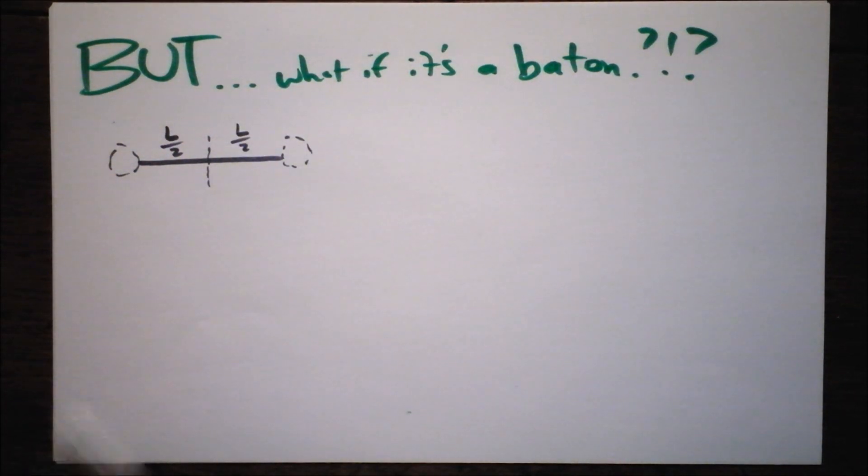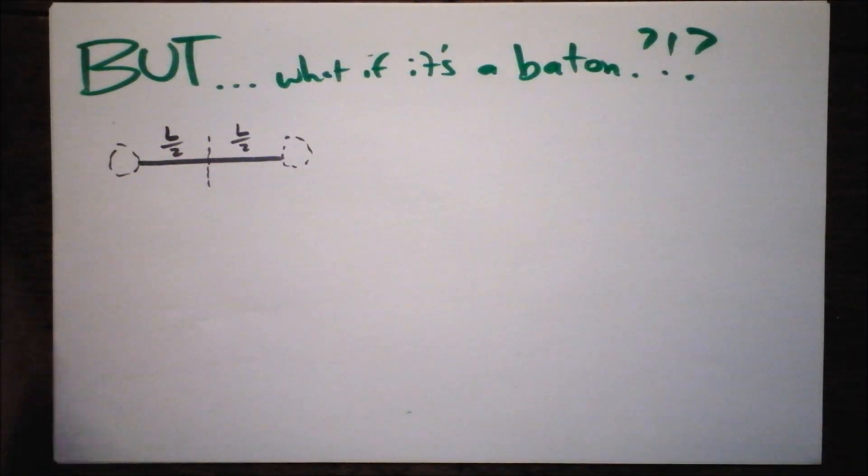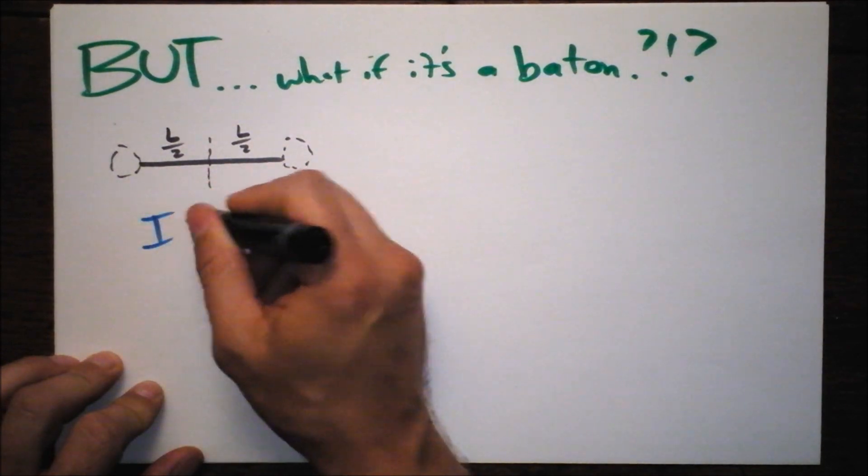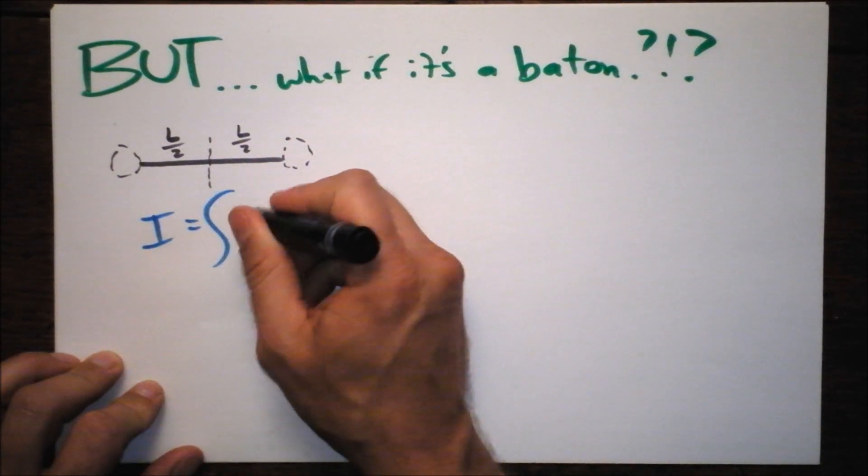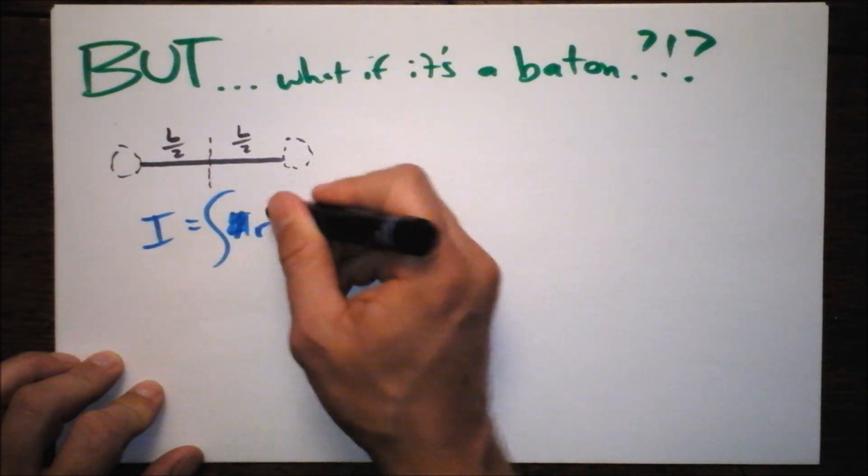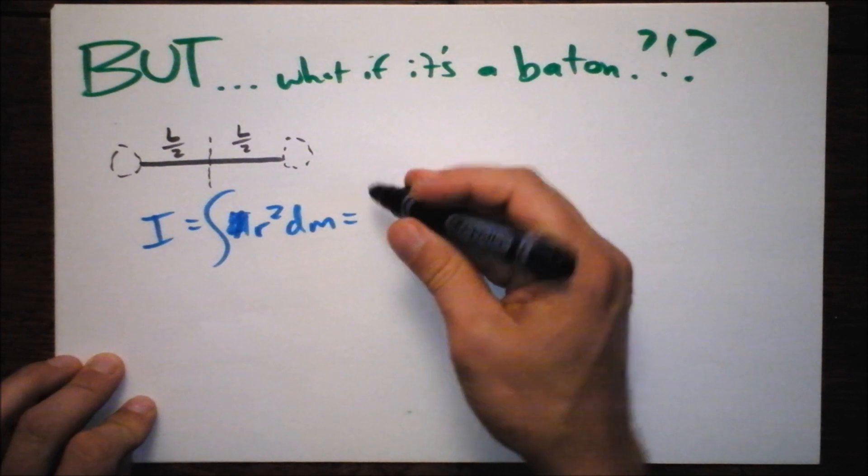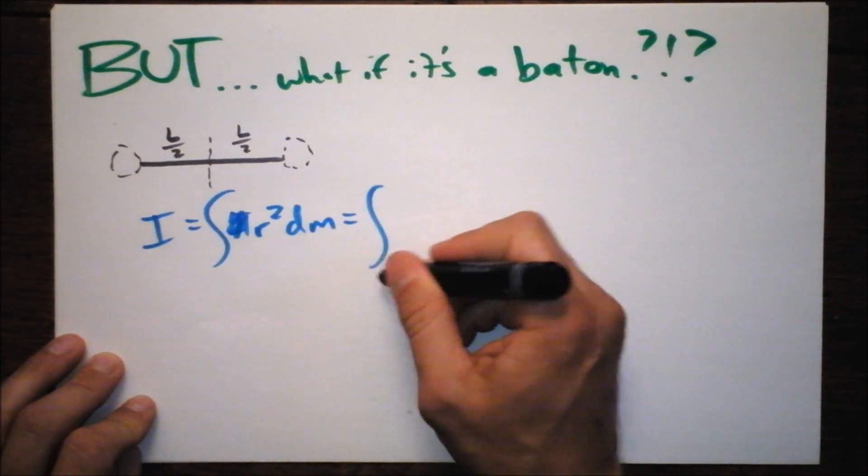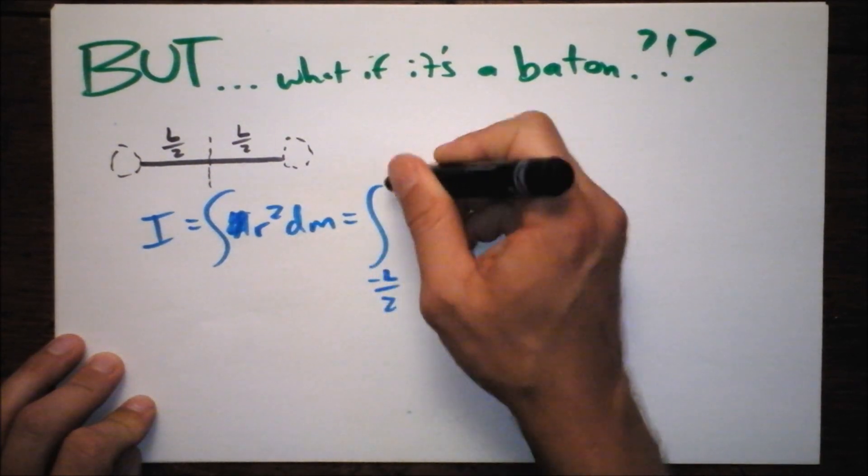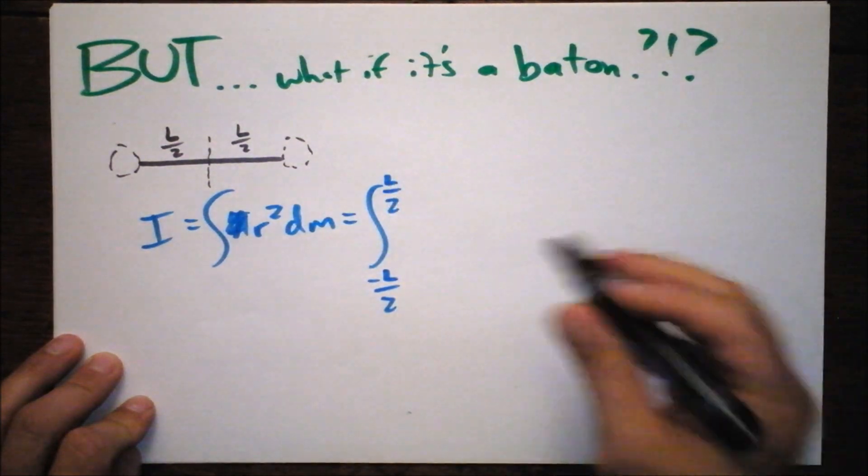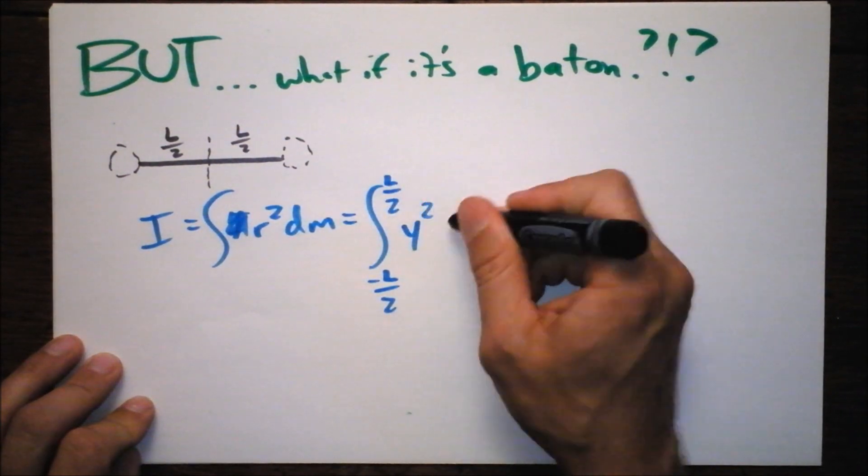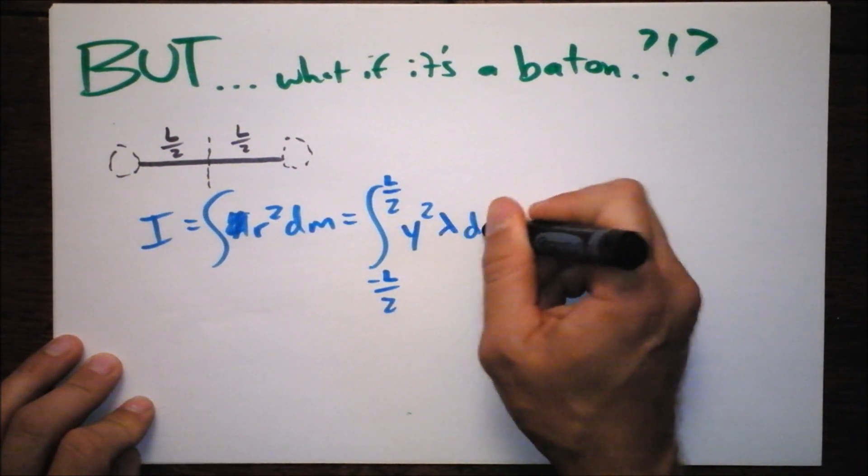That changes our integral very simply. It's not a big change. All I need to do is rehash a lot of this stuff from the previous video. We're going to get R squared dM right here. And that integral here is simply changing the bounds. We're integrating from negative L over two to L over two, and we still have Y squared times lambda dY.